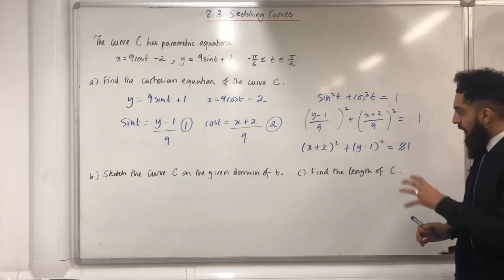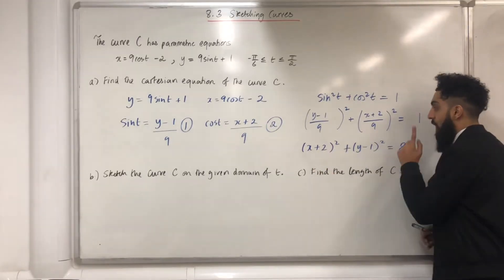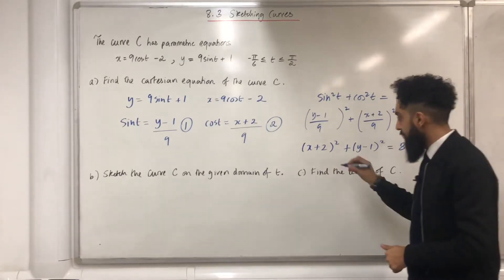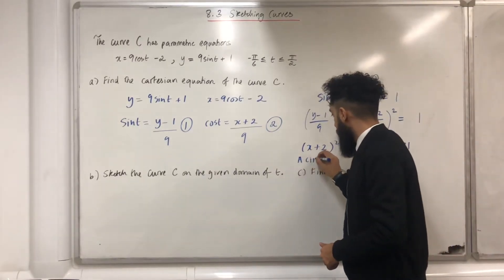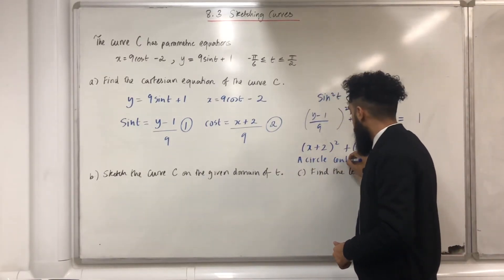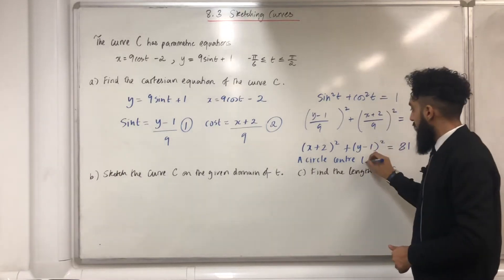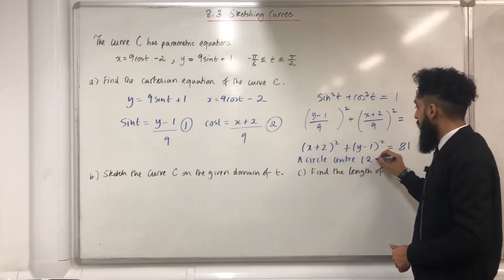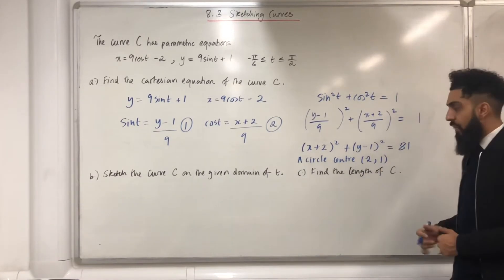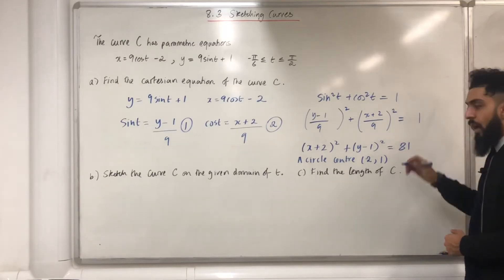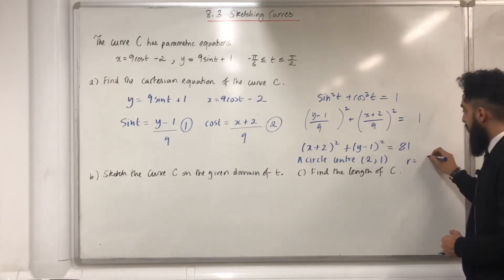So if I look at the Cartesian equation of the curve C, it represents a circle, centre minus 2, 1. And the radius is equal to square root of 81, which is just 9.